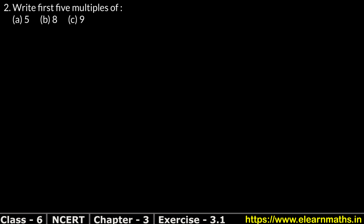Let's do question number 2 of exercise 3.1, that is 'Playing with Numbers'. Question number 2 is: write the first 5 multiples. We have to write the first 5 multiples.